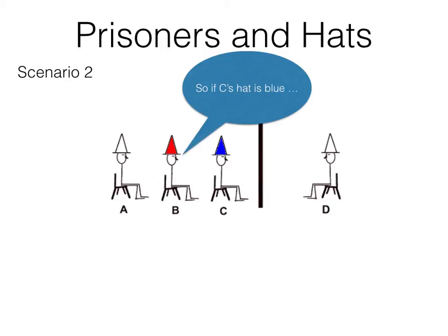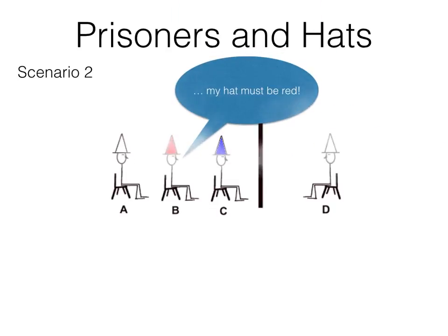Prisoner B can see in front of him the colour of C's hat, in this case blue. So he can now work out that his hat must be the opposite colour, in this case red.